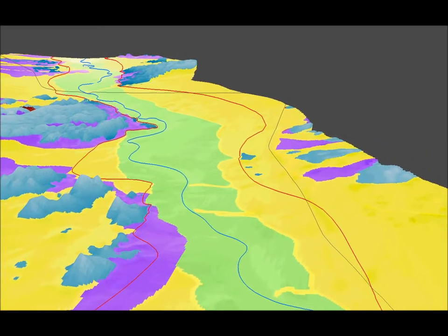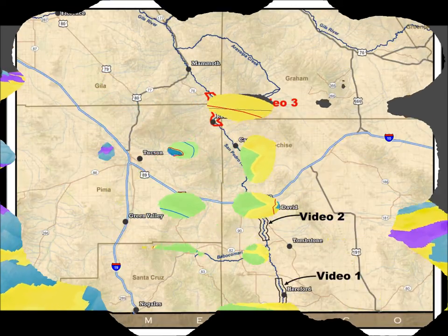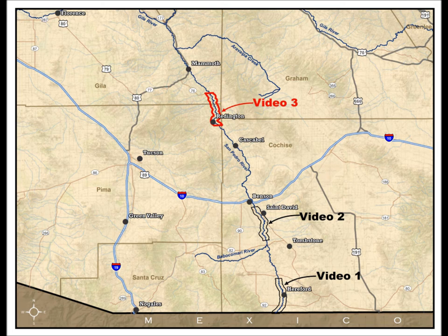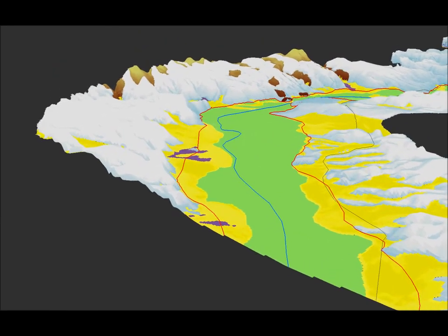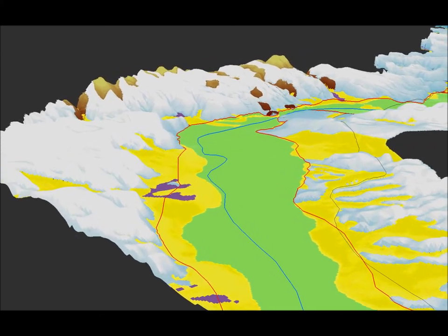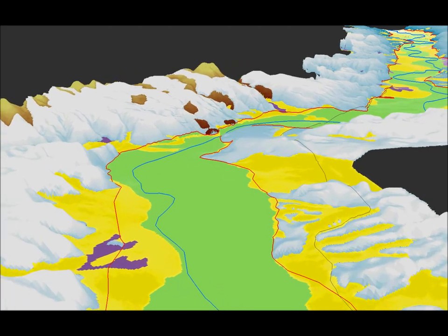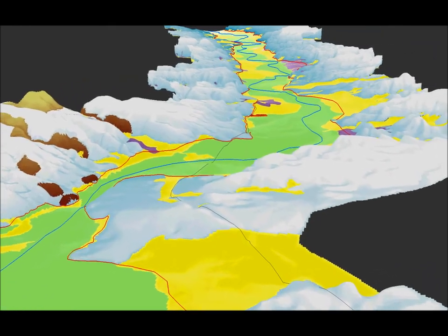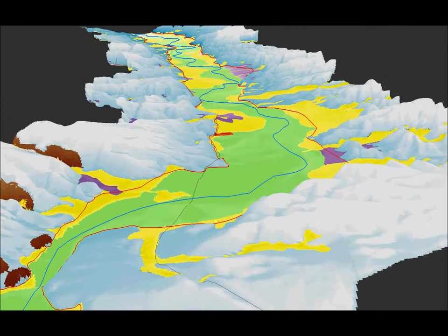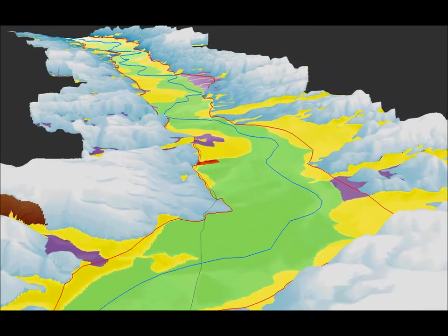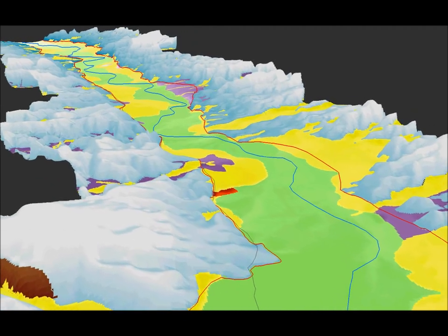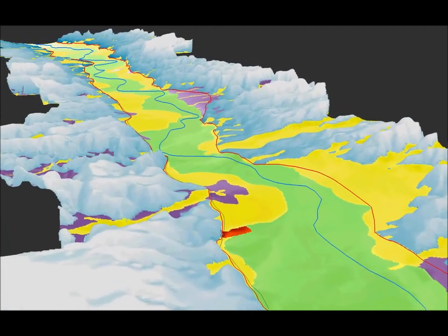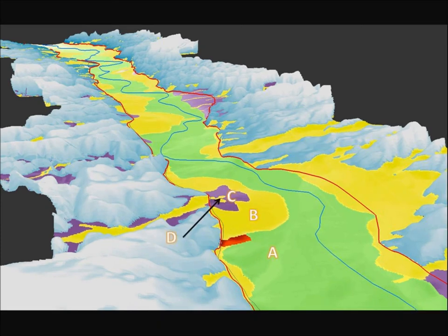The last video, which is highlighted in red on the map, begins south of Reddington where the floodplain bends to the east and narrows down between bedrock and basin fill. North of Reddington, the floodplain broadens and trends to the northwest. On the west side of the floodplain, I have labeled an alluvial fan A, B, C, and D.